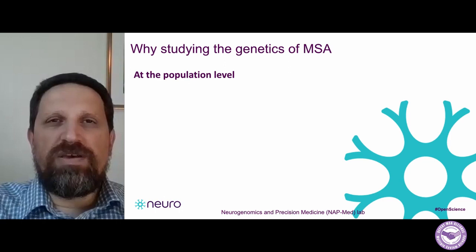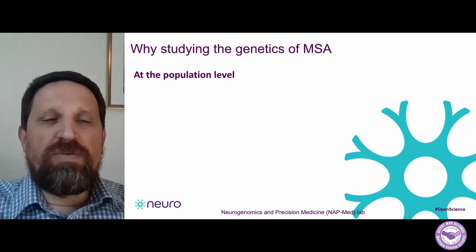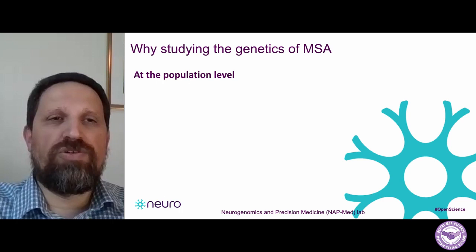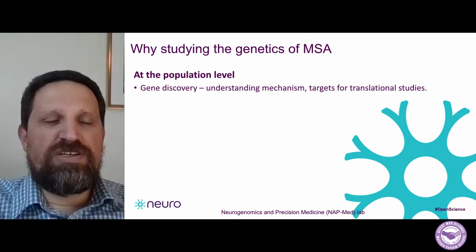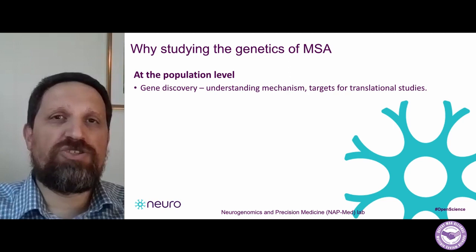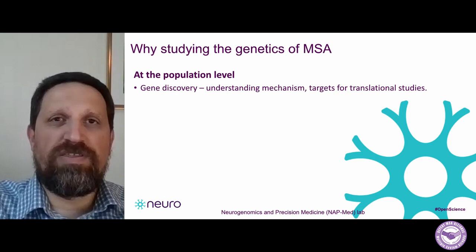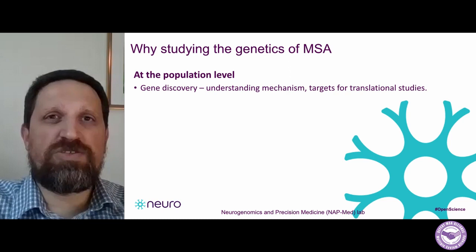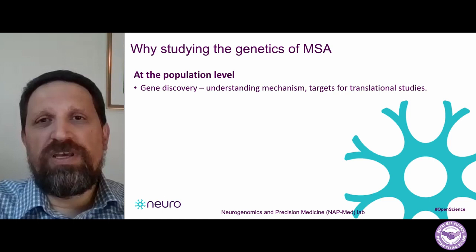So why are we studying the genetics of MSA? There are many different reasons and I will only mention the main ones. At the population level, when we take a large group of patients and study their genetics, the main thing we do is try to find genes that are involved in the disease. Once we identify these genes, it helps us understand the mechanism of the disease and, maybe more importantly, they provide us with targets for future translational studies — studies that help us eventually develop drugs from a specific target.